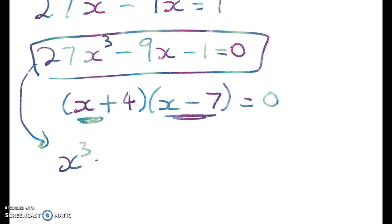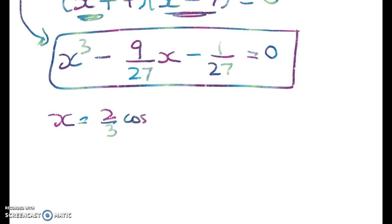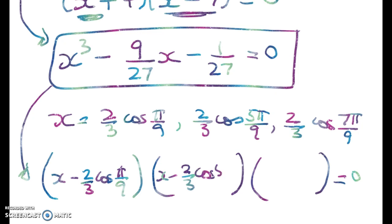So we've got x cubed minus, dividing everything through by 27. Okay, so that's my cubic. And I know my roots are x equals 2 thirds cos of pi on 9, 2 thirds cos of 5 pi on 9, and 2 thirds cos of 7 pi on 9. So that means that I can rewrite this in factorized form like this. So it'll be (x minus the first one)(x minus the second one)(x minus the third one).